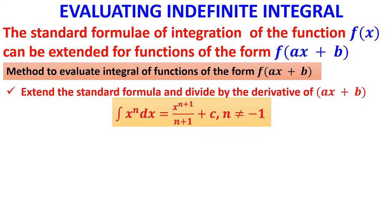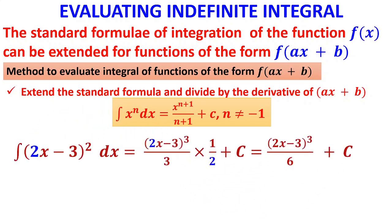For example, we have the formula ∫xⁿ dx = xⁿ⁺¹/(n+1). Suppose you have (2x − 3)². If it were x², the answer is x³/3. If it is (2x − 3)², it is (2x − 3)³/3 multiplied by 1/2 — that is, we are dividing by the coefficient of x, which is 2, as shown here in a different color.